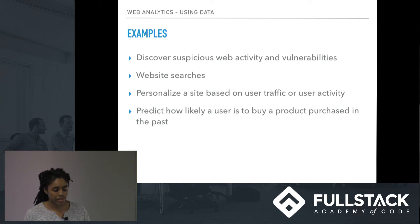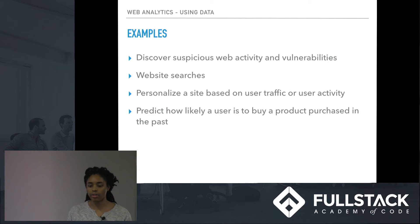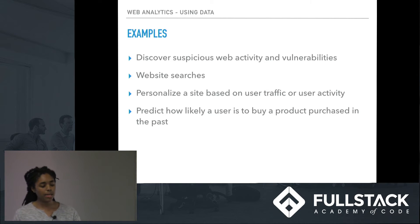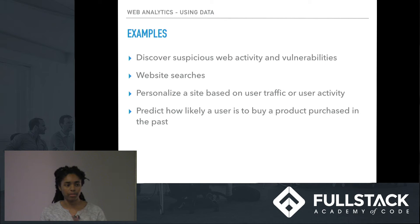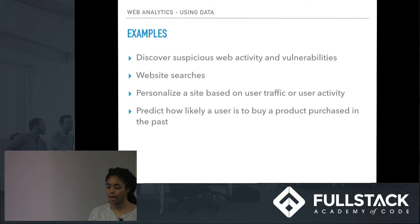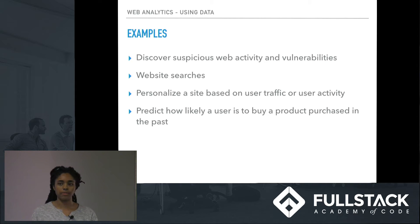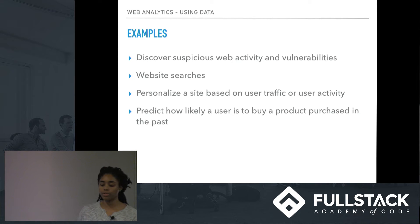Another way is to optimize your web searches — finding how you can more accurately match keywords and phrases, both internally on your webpage and on other pages linking to you. It can help you personalize your site based on user traffic or activity, figuring out how to better organize your page so it's more efficient and user friendly. And it can be used for predictive metrics — figuring out how likely someone is to buy a product they've bought before, or how likely someone in a certain area is to purchase a product — saving resources and maximizing efficiency.